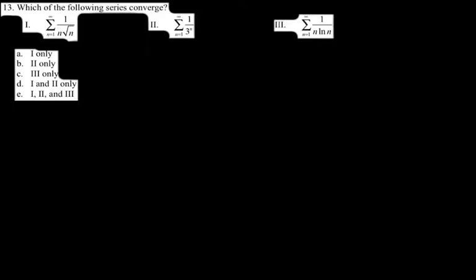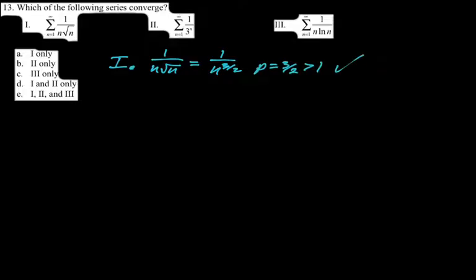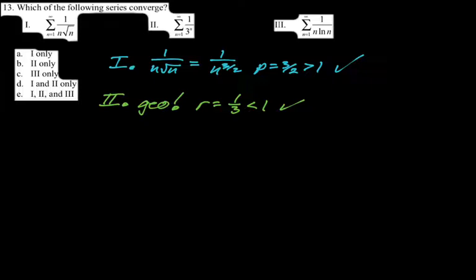Number 13: which of the following series converge? The first one is a p-series — rewrite one over n times root n as one over n to the three halves. Three halves is greater than one, so this converges. Number two is geometric with r equals one third. One third is less than one, so this converges.